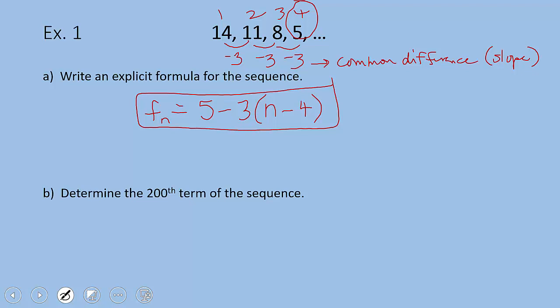The second part of this question says determine the 200th term of the sequence. If I want the 200th term and this is the explicit formula, I just got to plug in 200. Here we go. f sub 200 is going to be 5 minus 3 times 200 minus 4.